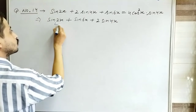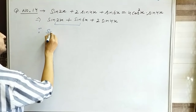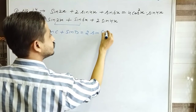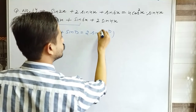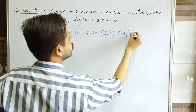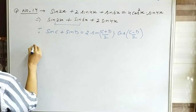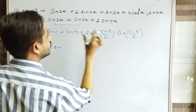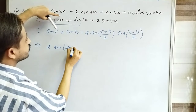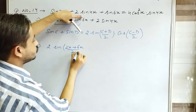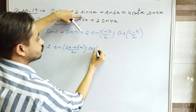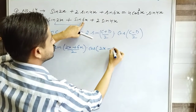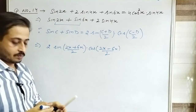Now here I am using the identity: sinC + sinD = 2sin((C+D)/2) · cos((C-D)/2). The first angle is 2x and the second angle is 6x; add both and divide by 2, then into cos: subtract 2x minus 6x and divide by 2.